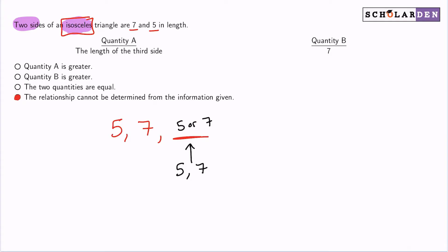And if it was five, then that means that quantity B would be greater. But if it was seven, that means that they're equal. But we don't know which one it is. And that's why we simply can't determine the relationship from the information given because it's just not specific enough.